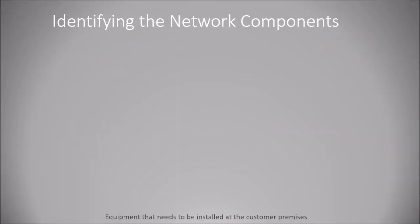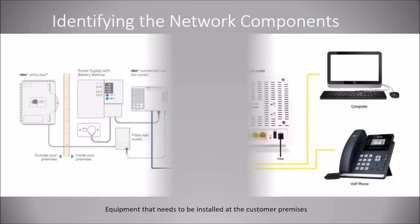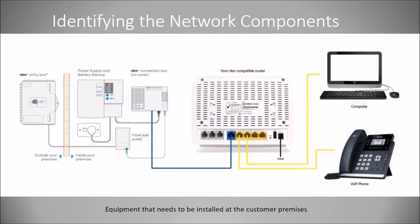If you choose the NBN network, your service provider will install an NBN utility box outside your home. A fiber will connect it with the fiber wall outlet located inside the house, which is then connected to the NBN connection box. Using an ethernet cable, the NBN connection box is connected to a compatible router, which can be used to connect users and devices like laptops or VoIP phones. Customers can also opt for a battery backup kit which can provide up to 2 hours of service in case of a blackout.